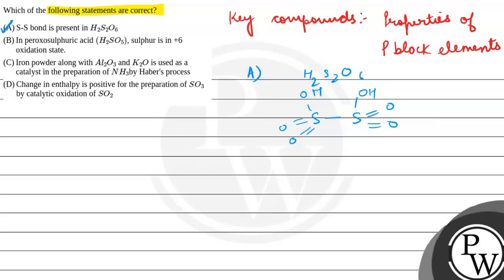The S-S bond is present in this structure. B is peroxosulfuric acid, that is H2SO5. Let's draw this. Peroxyl linkage. We have a peroxyl linkage.